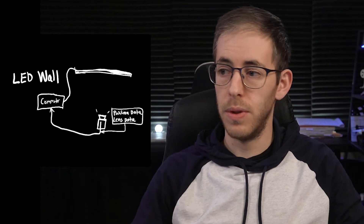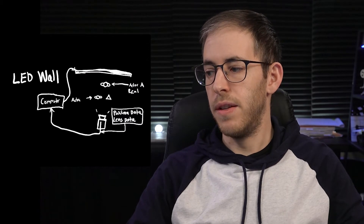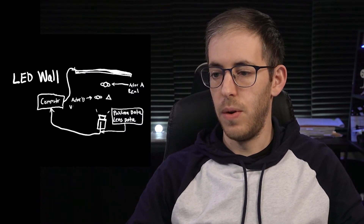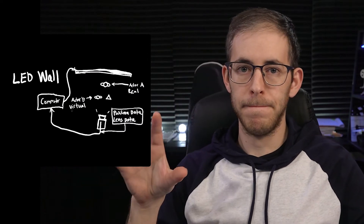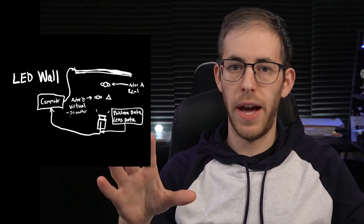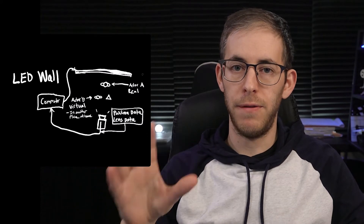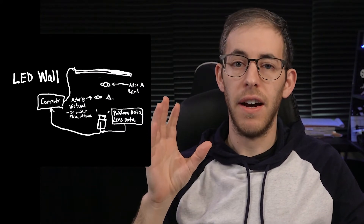The camera is going to feed the information into the computer. The computer is going to combine the information from the virtual production world and the camera's view, and then combine that onto the LED wall. And then here we have a real actor, a virtual actor, a real object, and a virtual object. So in this scenario, you have a fake wall, a fake object, and a fake actor.